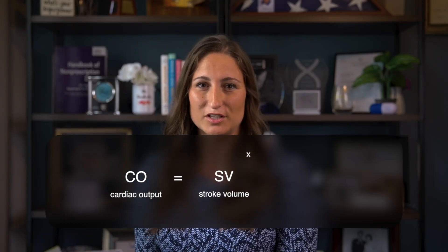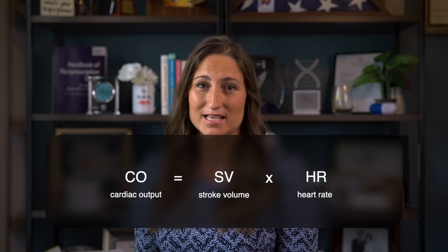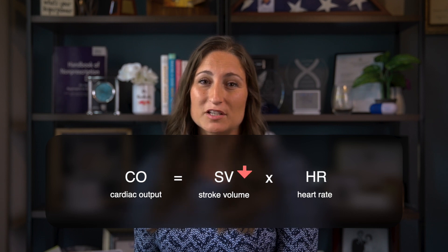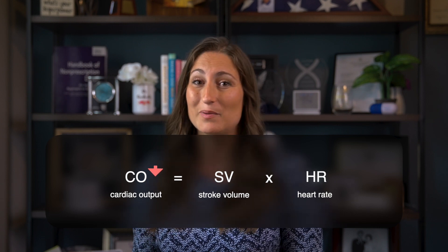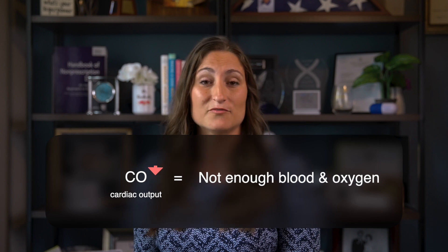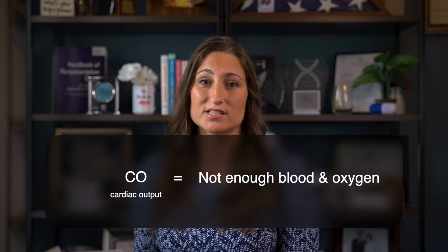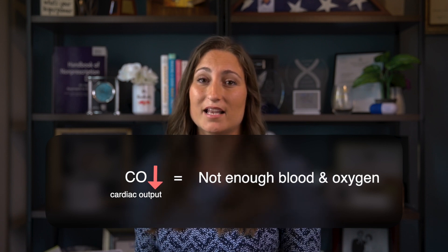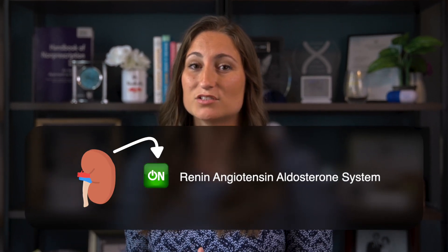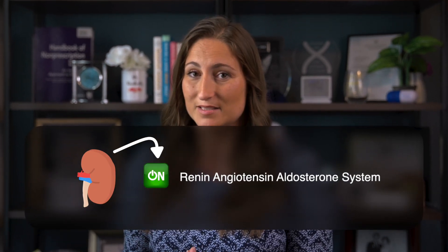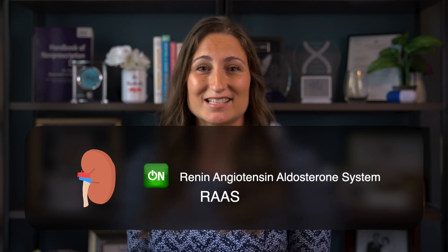Cardiac output equals stroke volume times heart rate. As stroke volume decreases, cardiac output is decreased. The body is a little angry about not getting enough blood and oxygen supply, and it starts to compensate. One way it compensates is by activating the renin angiotensin aldosterone system, known as RAS.